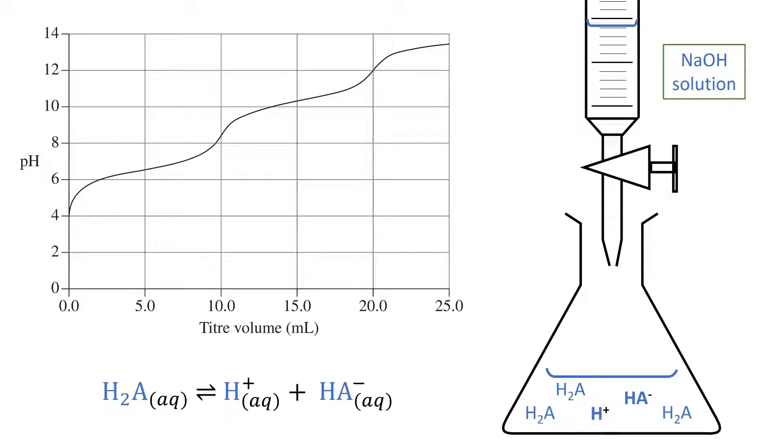As we add sodium hydroxide to the conical flask, the hydrogen ions get used up by the hydroxide ions to form water as in this equation. This will reduce the hydrogen ion product in our acid dissociation equation.